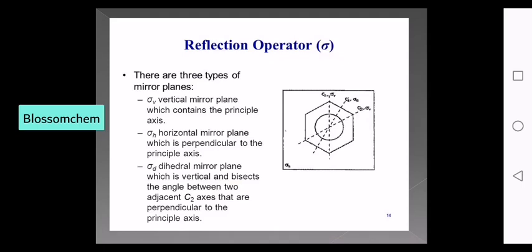Sigma v and sigma h are two types of mirror planes. Sigma h is perpendicular to the principal axis. Sigma d is the diagonal or dihedral mirror plane — it is vertical and bisects the angle between two adjacent C2 axes.